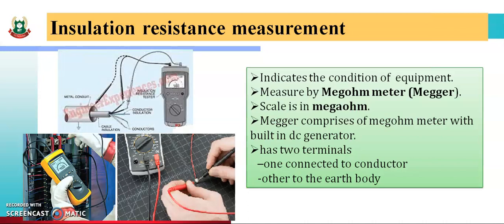The two terminals of the megohm meter are connected across the insulation — one terminal is connected to the conductor and the other to the earth body. When measuring insulation resistance, the handle is rotated by hand or by a motor. The insulation resistance is then indicated by the pointer in megohms.